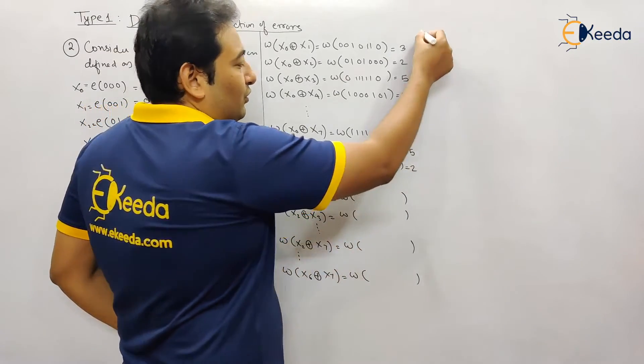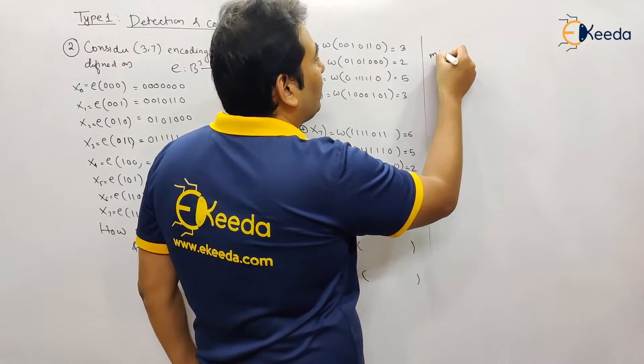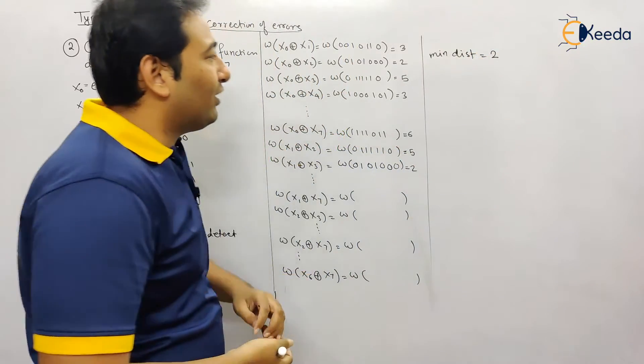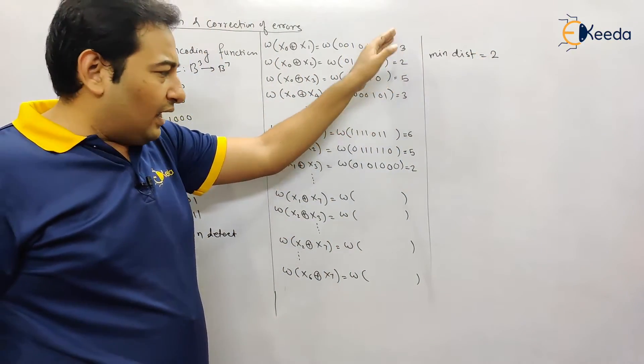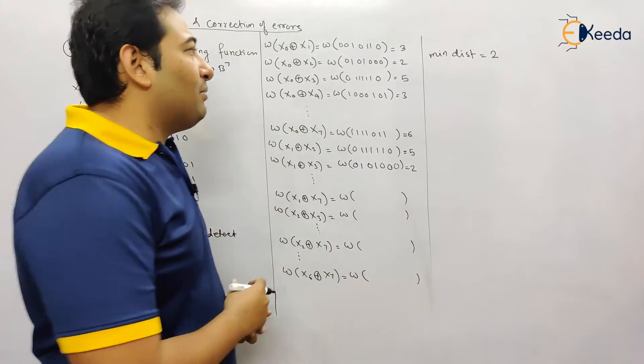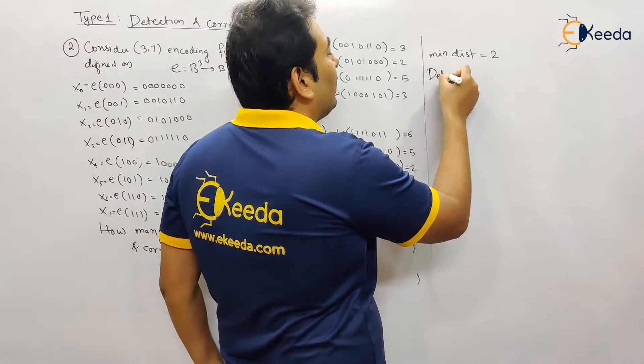After that, you need to check what is the minimum distance. If you find or check what is the minimum distance, the minimum distance that you're going to get is 2. Remaining all the distances will be 2 or greater than 2, so minimum distance is 2.